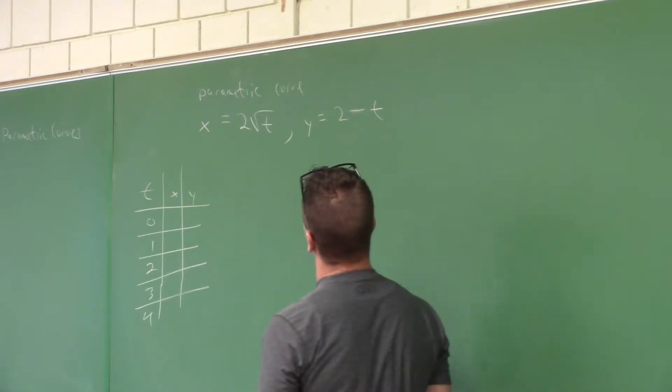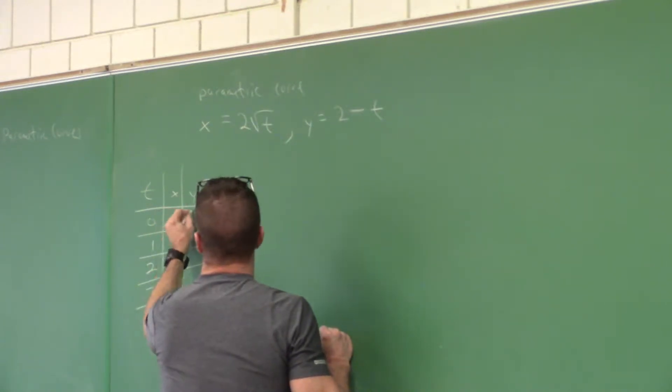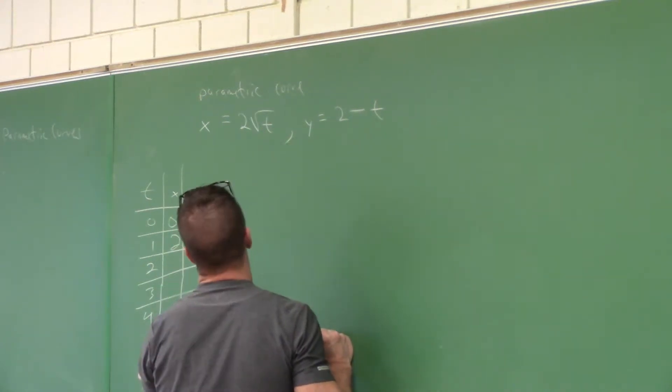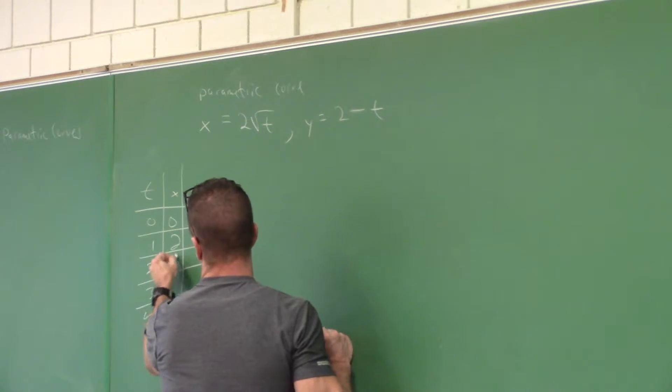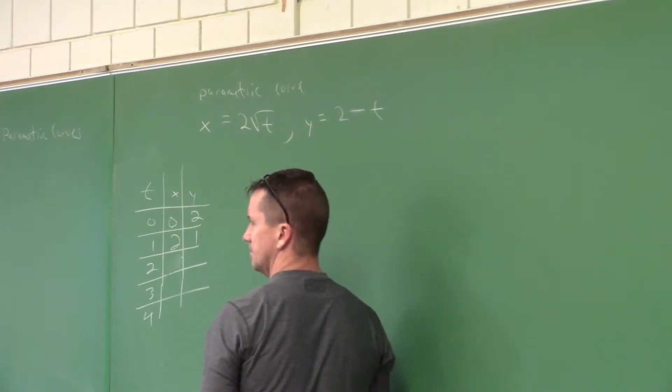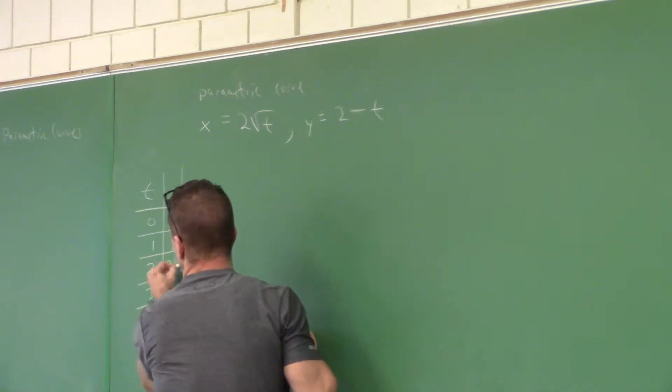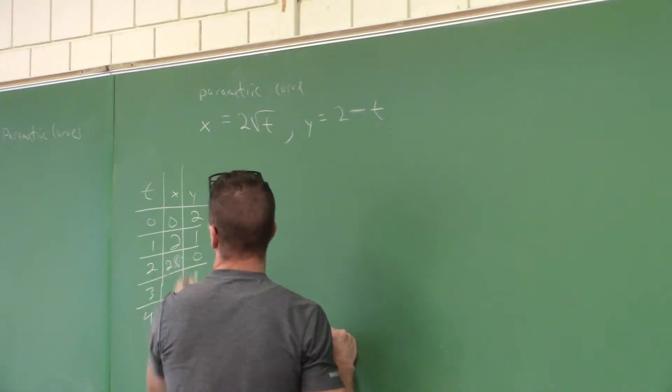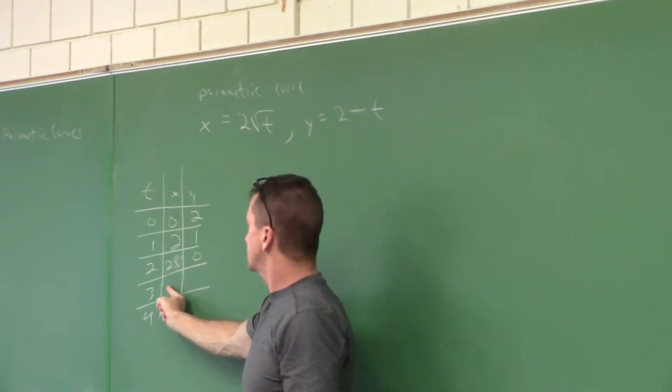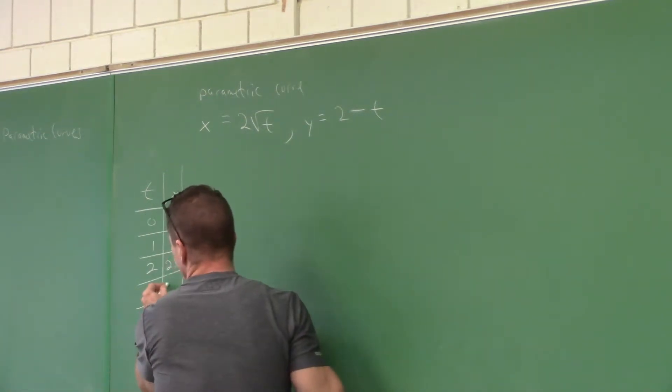What's going on at zero? Zero. Two. How about one? Two. One. How about two? Two squared of two. What's two times 1.4 about? The square root of two is 1.4. Two times 1.4 is 2.8. And two minus two is zero. The square root of three is about 1.7. What's two times 1.7? Three point four. Oh, roughly three point four.